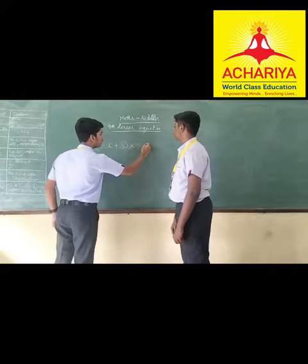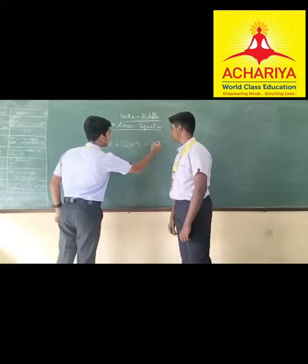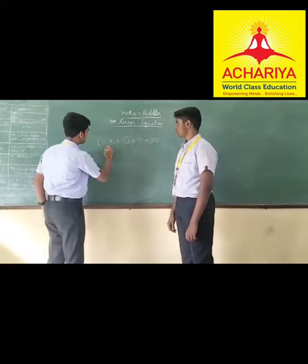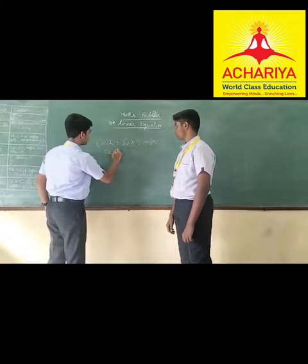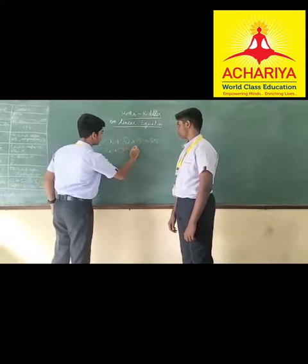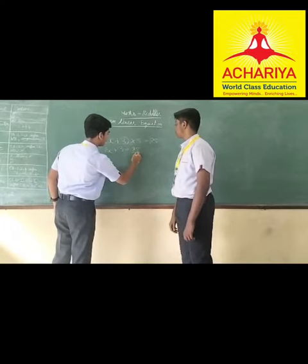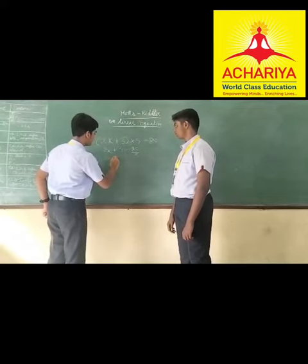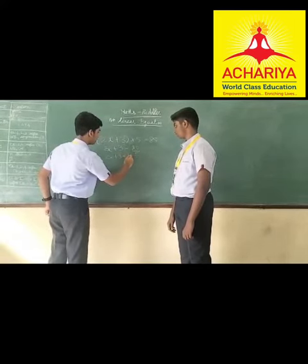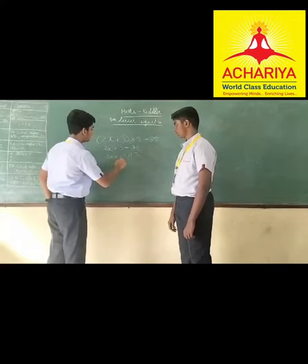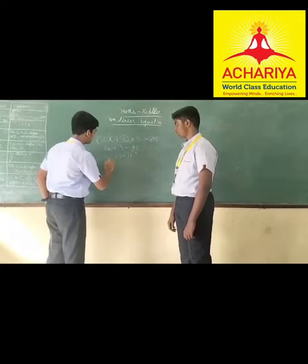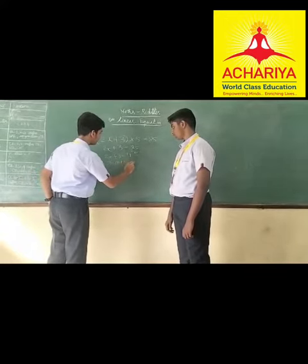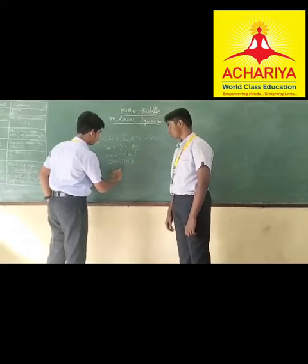Equal to 85. Now we will send 5 to this side. It will be 85 divided by 5. 85 divided by 5 will be 17. So 2x plus 3 is equal to 17. Now we will send plus 3 to this side — it will become minus 3. So 2x is equal to 17 minus 3, which means 2x is equal to 14.